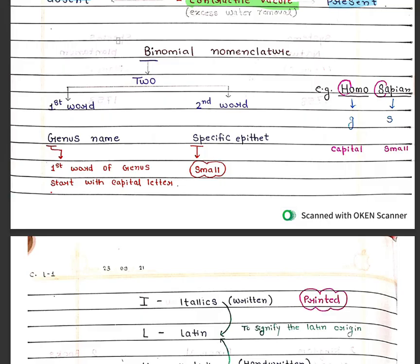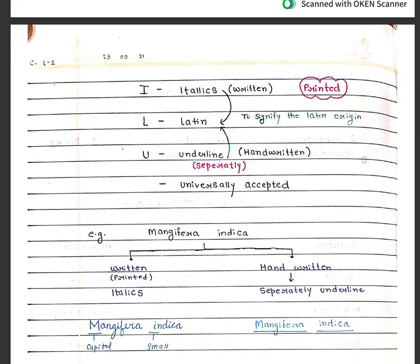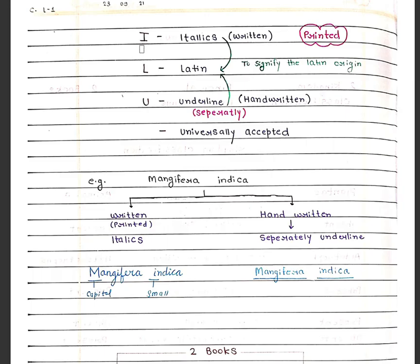Binomial nomenclature was also given by Carlos Linnaeus. It is the way to write scientific names, divided into two parts: the first word is the genus name and the second word is the specific epithet. The first letter of the first word is written in capital and the rest in small letters. For example, Homo sapiens — 'H' in Homo is capital and sapiens is in small.